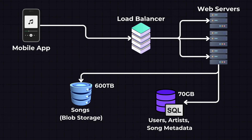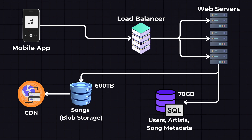Since traffic has increased, we need to introduce caching and a CDN such as Cloudflare or CloudFront to serve songs. Each CDN node is geographically close to a region and can serve songs faster than the web server. We can use an LRU (Least Recently Used) eviction policy for caching popular songs; unpopular songs are fetched from blob storage and then cached to the CDN. Song files can now be streamed directly from cloud storage to the client, reducing load on the web servers.